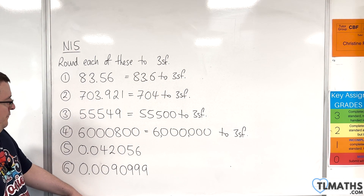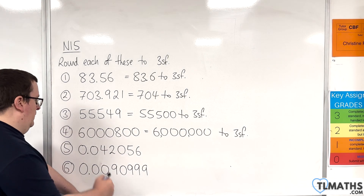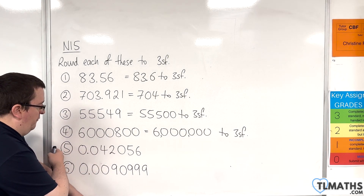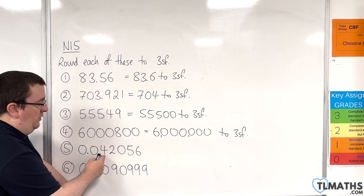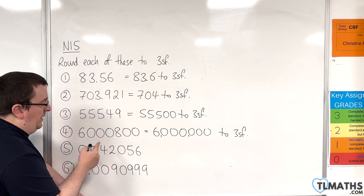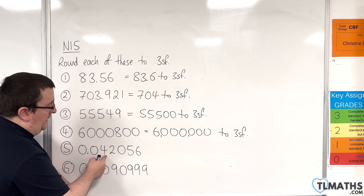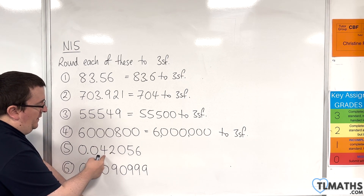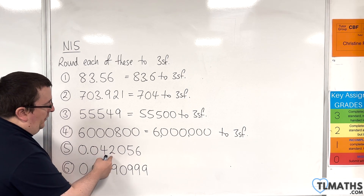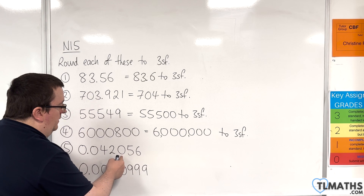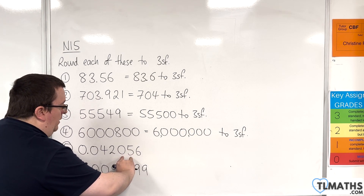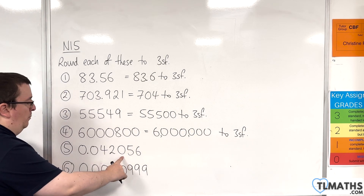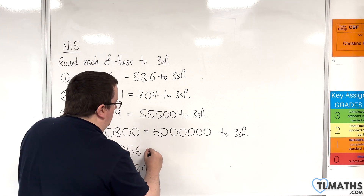Number five: going from the left to the right, this is the first non-zero value that we come across, so this is the first significant figure. This is the second, this is the third. To the right is a five so we round up. So this would be 0.0421.